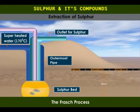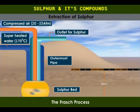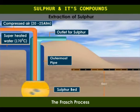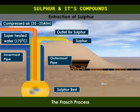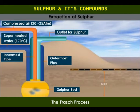Compressed air under a pressure of 20 to 25 atmospheres is pumped through the innermost pipe. This forces the mixture of water and molten sulfur to gush out through the middle pipe. This mixture of water and molten sulfur is collected, and on cooling, about 99% pure sulfur is separated.